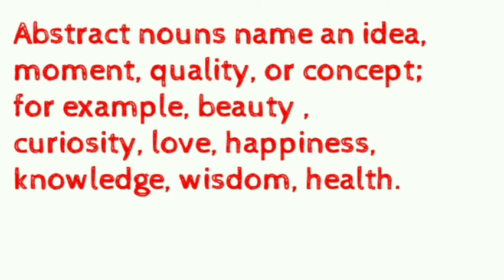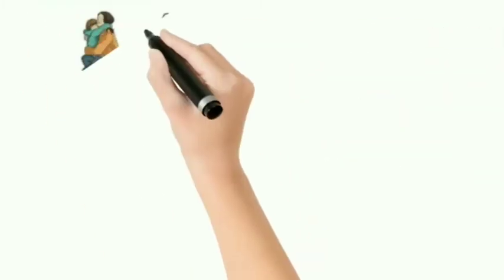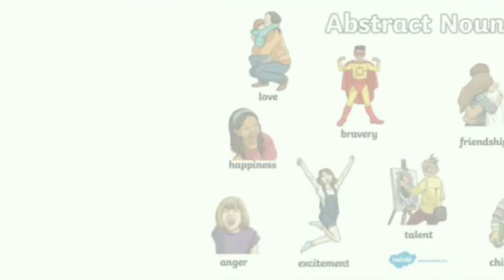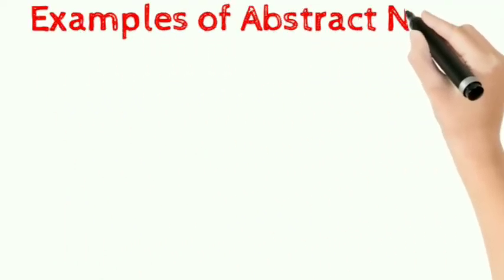Here we have some more examples of abstract nouns: love, bravery, friendship, health, happiness, excitement, talent, childhood, anger, wealth, and knowledge. Students, let's memorize some more abstract nouns.